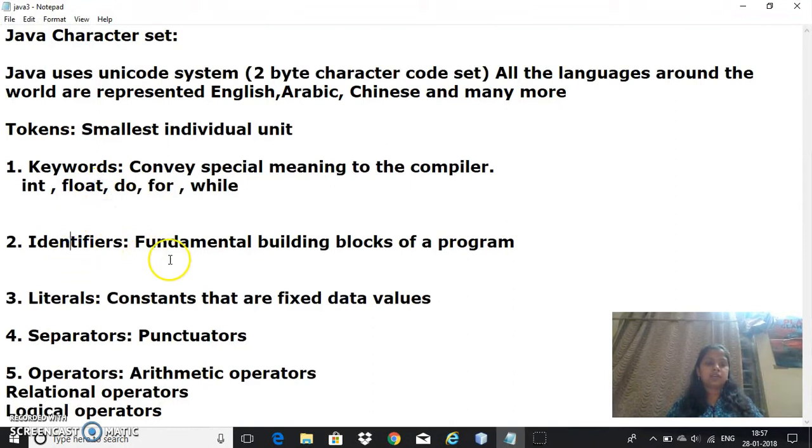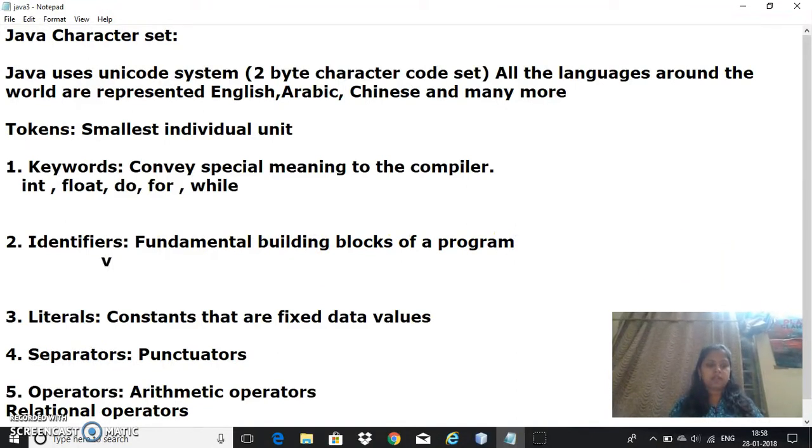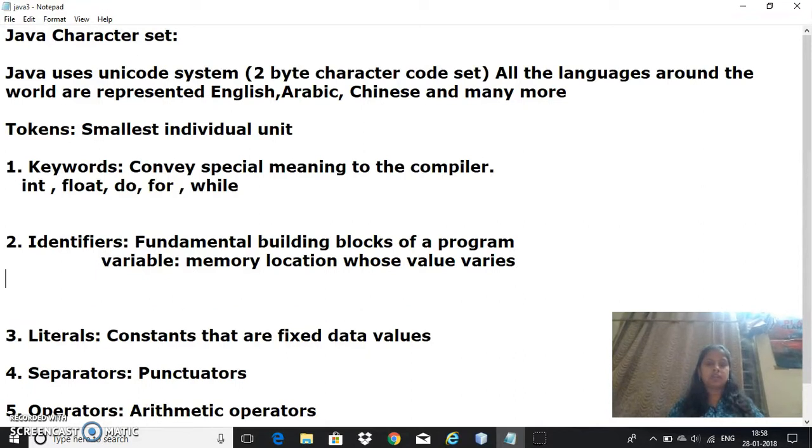The second thing is identifiers. These are known as fundamental building blocks of a program. Under this we have variables - a variable is a memory location whose value varies. It's a name we give for the memory location. We can also have arrays and classes.